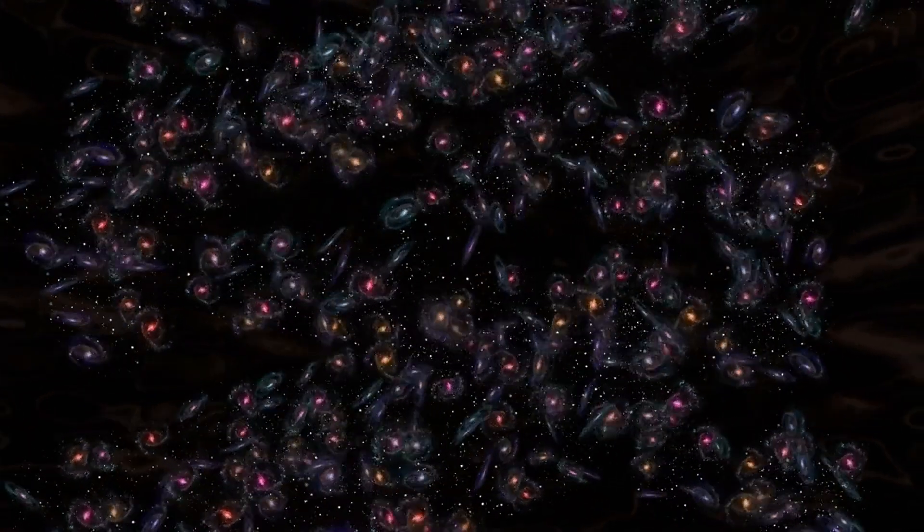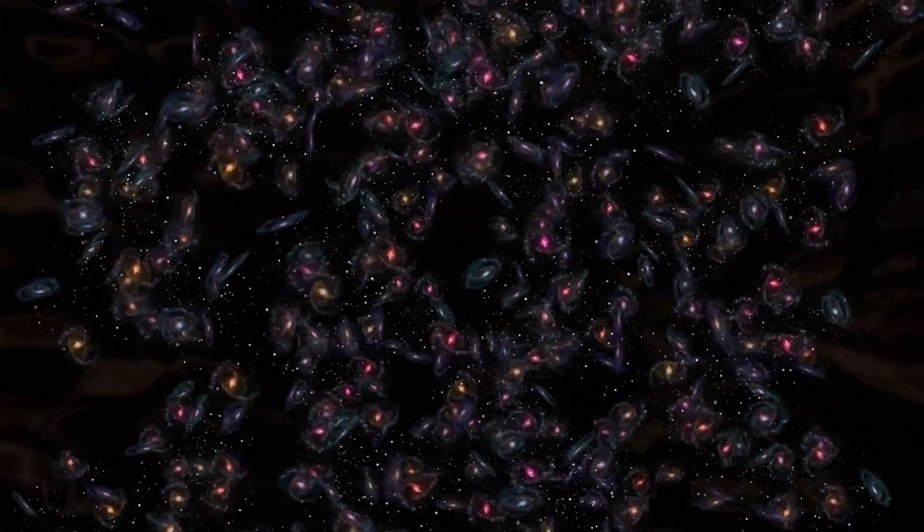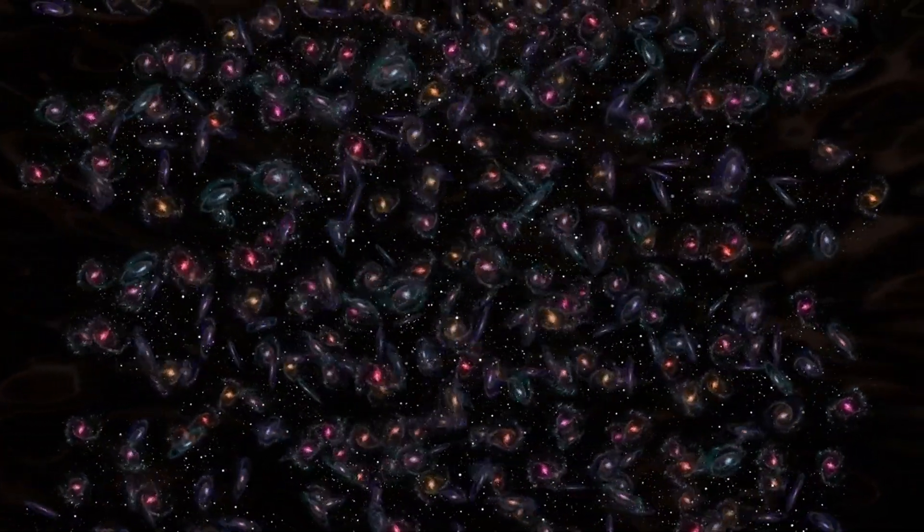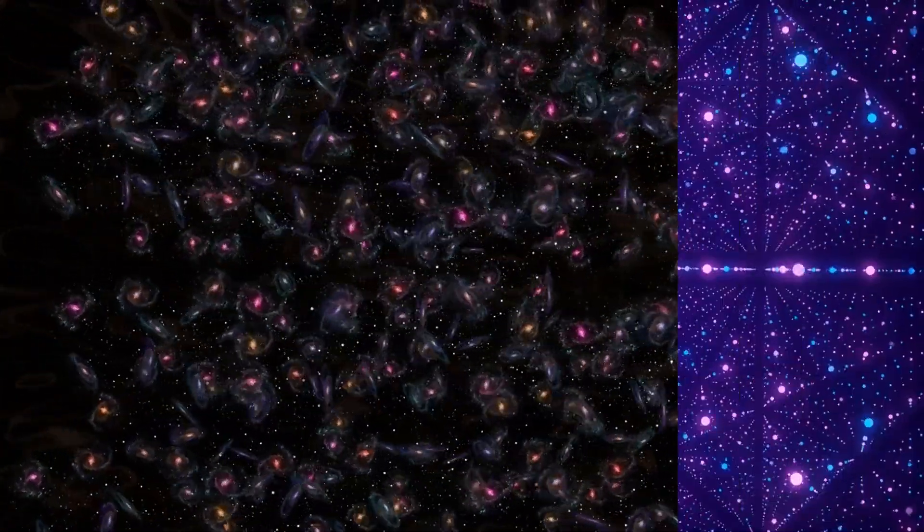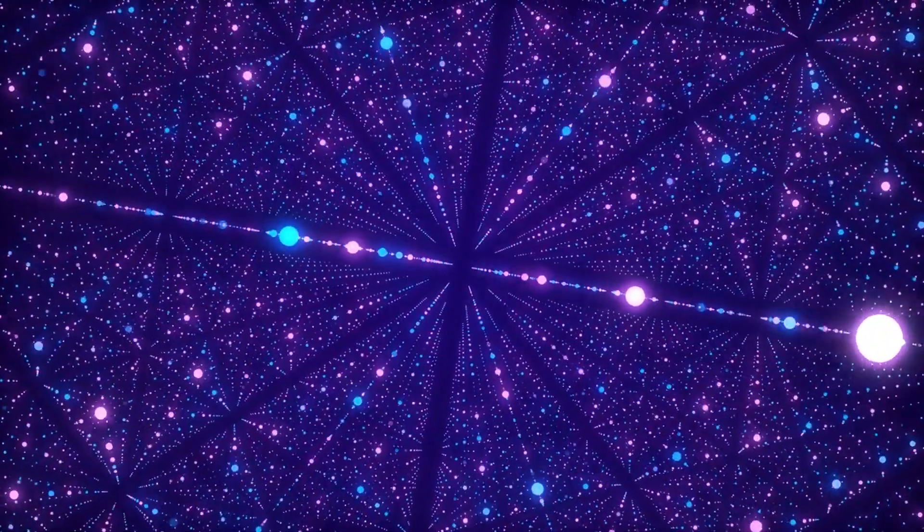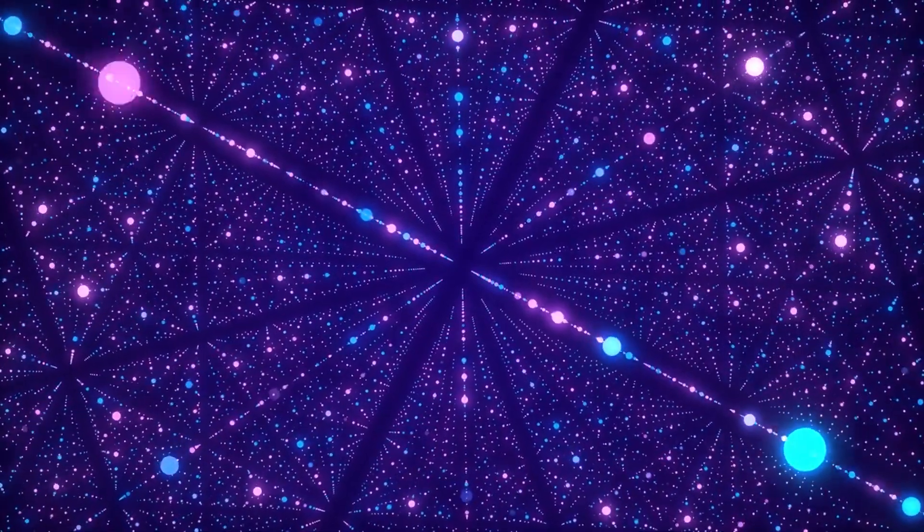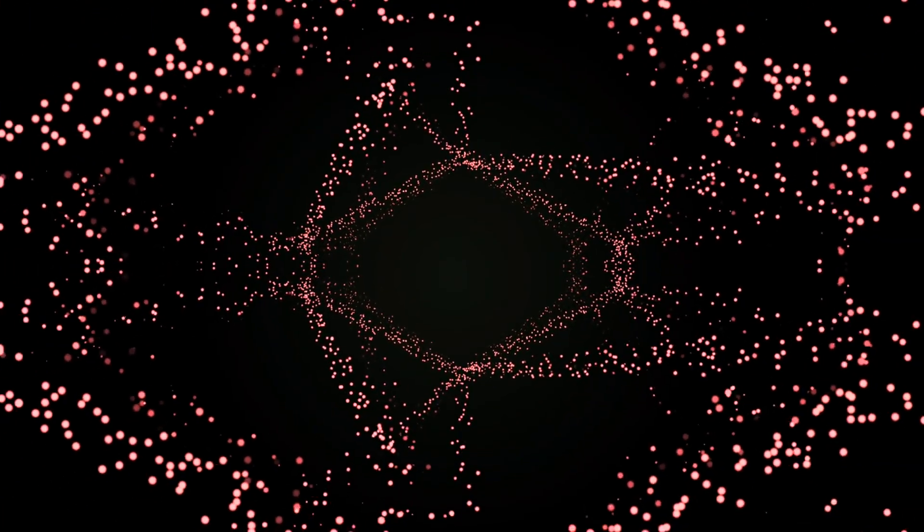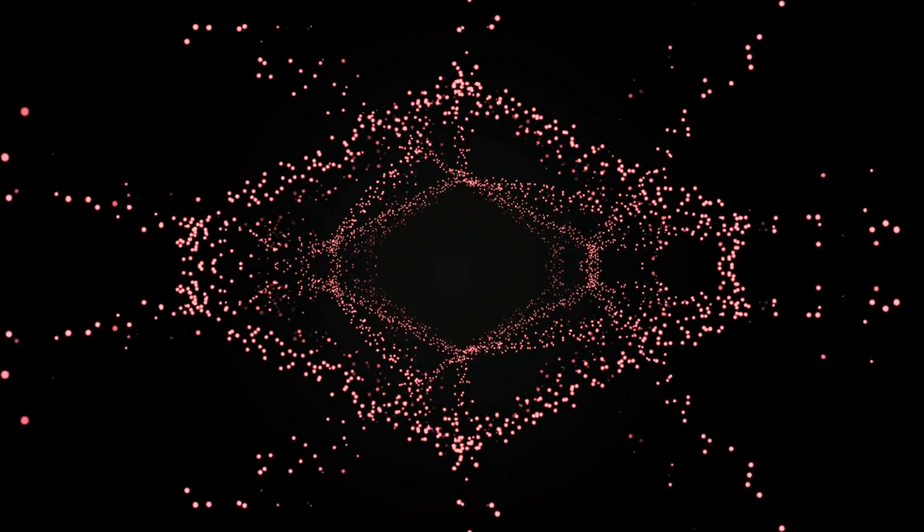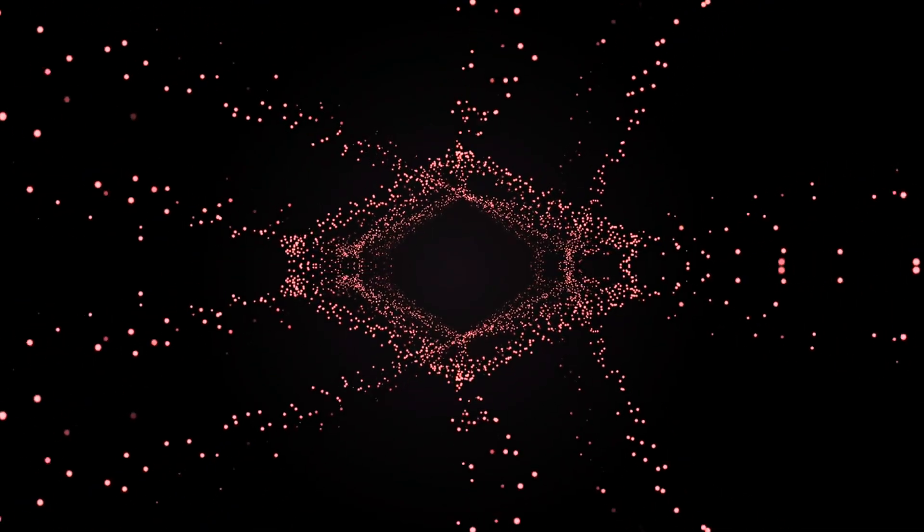This void spans an estimated diameter of 330 million light-years and contains very few galaxies compared to its surroundings. Let's expand our perspective beyond our planet, our solar system, and even our galaxy to grasp the grand architecture of the universe. When we zoom out to this vast scale, we observe that the universe is not a random scattering of celestial objects but rather resembles a vast and intricate cosmic web.